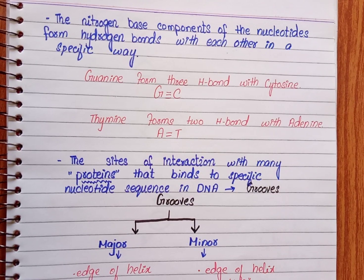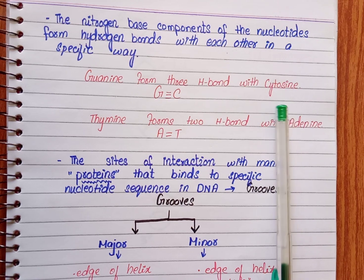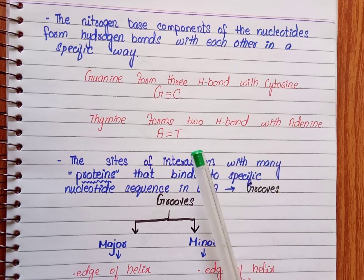In the secondary structure, the nitrogenous bases of complementary nucleotides are joined to each other by hydrogen bonds. The nitrogenous bases present in DNA or RNA include guanine, cytosine, adenine, thymine, and uracil. In DNA specifically we have adenine, guanine, cytosine, and thymine. The base pairing is: guanine forms 3 hydrogen bonds with cytosine (G-C), and thymine forms 2 hydrogen bonds with adenine (A-T).